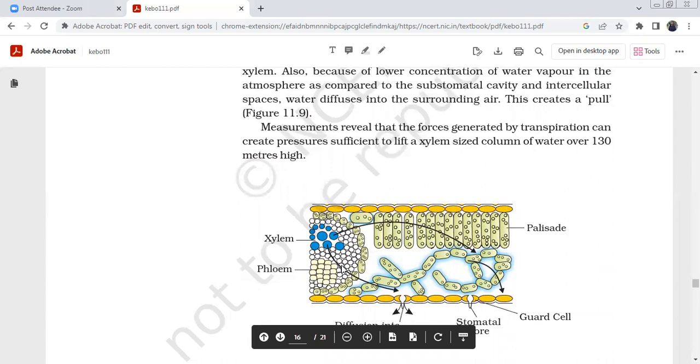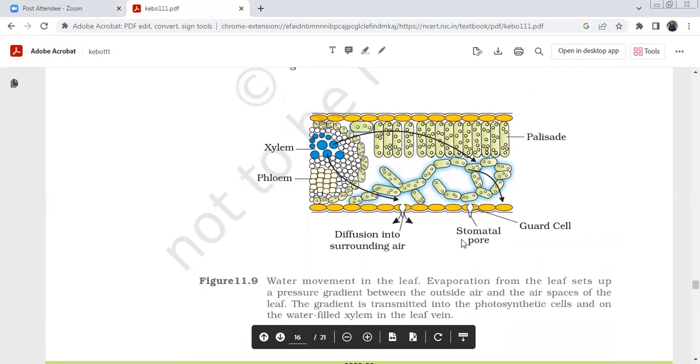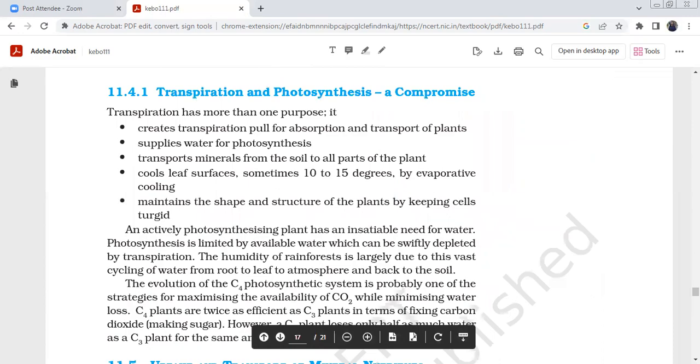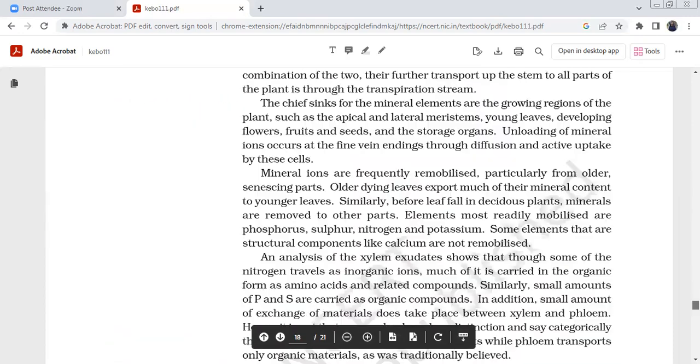This is phloem, palisade parenchyma, and spongy parenchyma. In the spongy parenchyma, guard cells form a stomatal pore. Water movement occurs from xylem through diffusion into surrounding air. Water movement in the leaf and evaporation from the leaf sets up a pressure gradient between outside air and air spaces of the leaf. This gradient is transmitted into photosynthetic cells through water-filled xylem into the leaf vein.